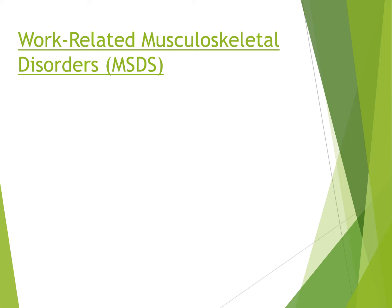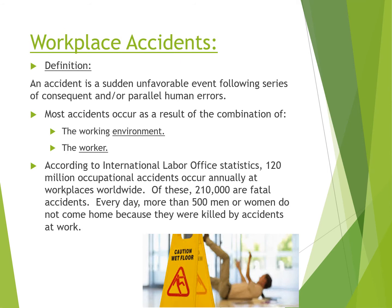اللي فات ده اتعمله بسرعة. دلوقتي هنتكلم على حاجة مهمة تانية: المخاطر اللي ممكن تأثر على الجهاز العصبي والعظمي والعضلي. هنقسمها لحاجتين: الـ workplace accidents، والـ ergonomics. الـ workplace accident ليها تعريف محدد جداً: هي a sudden unfavorable event following a series of consequences and/or parallel to human error.